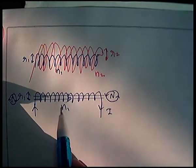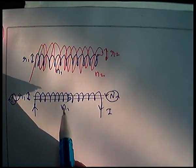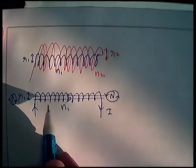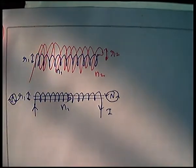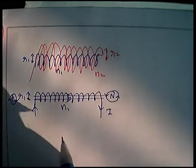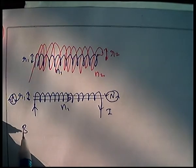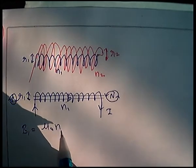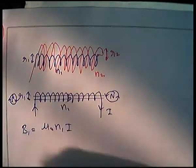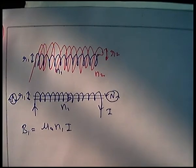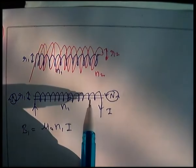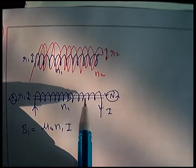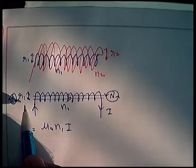Let's talk about the solenoid inside the solenoid. The magnetic field on the axis well inside the solenoid — what is the formula? B equals mu naught N1 I. This is the magnetic field inside, well inside the solenoid.